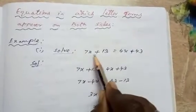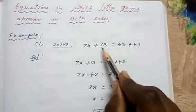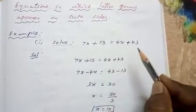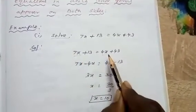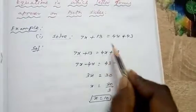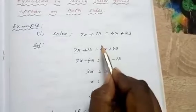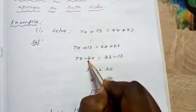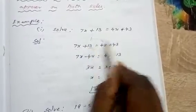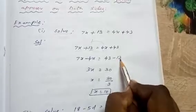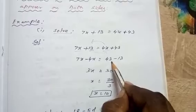Solve: 7x + 13 = 4x + 43. Here the left hand side has 7x and the right hand side has 4x. Taking variables and constants on one side: transposing +4x to the left becomes -4x, and transposing +13 to the right becomes -13. So the left hand side is 7x - 4x, and the right hand side is 43 - 13.